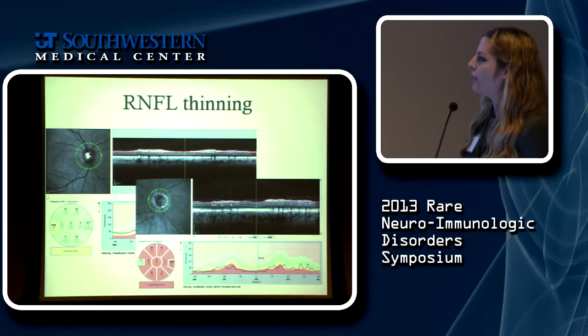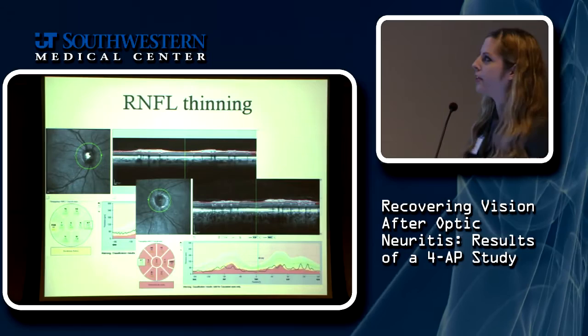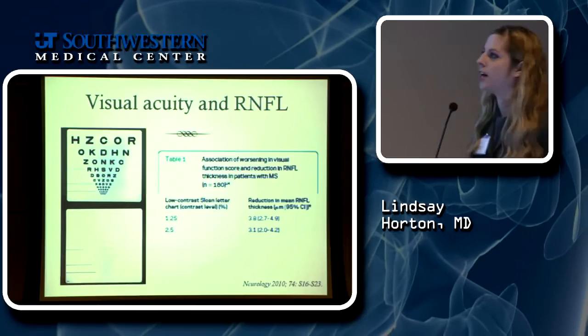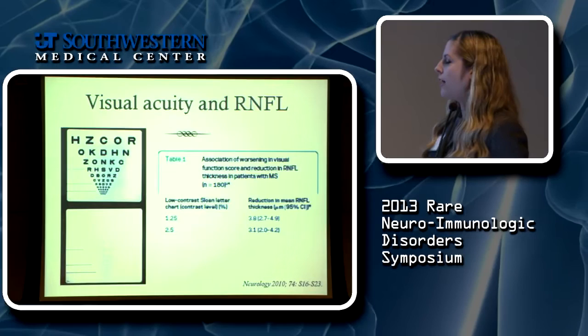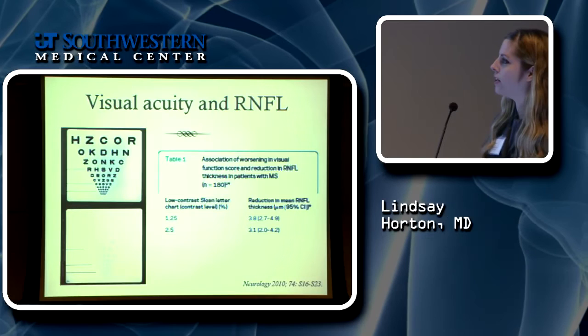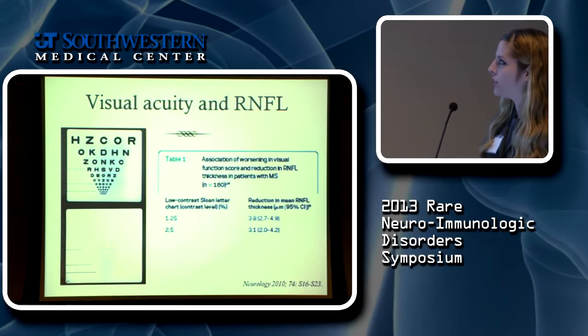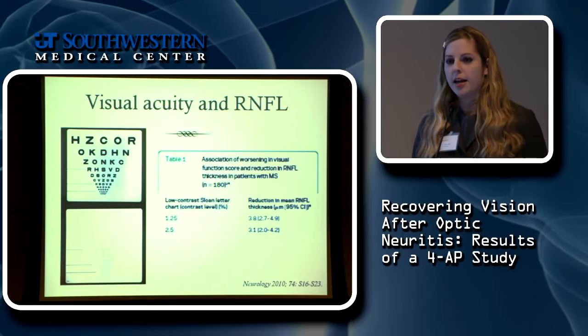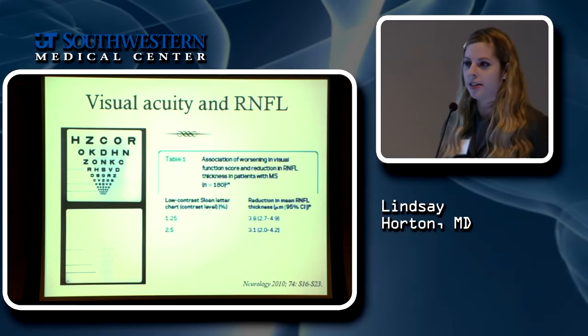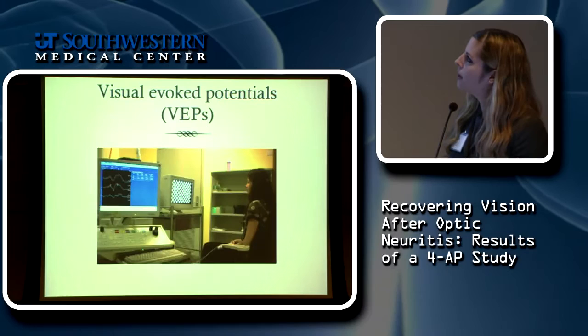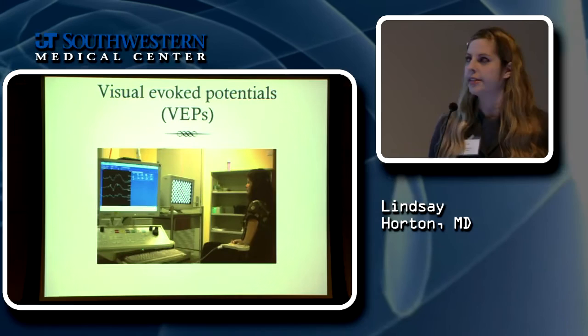The OCT tells us very specifically how much structural damage has been done to the optic nerve. Laura Balser, now at NYU, showed that for every level of vision loss on the low-contrast chart, you actually have four microns of thinning of your retinal nerve fiber layer. This shows that OCT very accurately predicts how much someone can see based on how much damage has been done — those two tests are very well correlated.